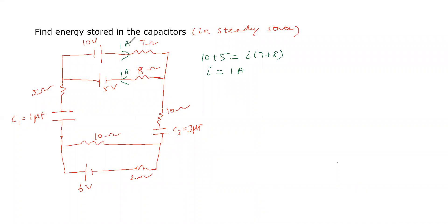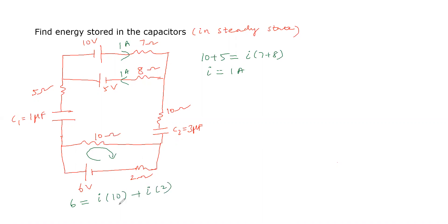Similarly, for the second loop: taking this closed path, the EMF is 6 volts. That equals current times resistance: current into 10 plus current into 2, giving 12 times I equals 6.